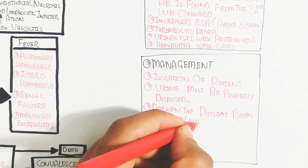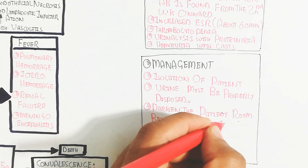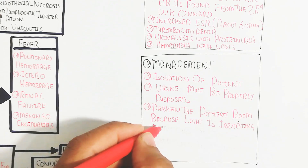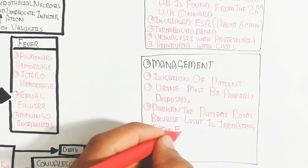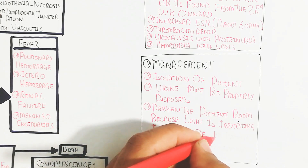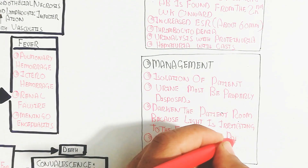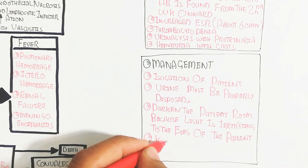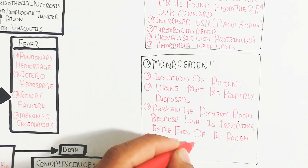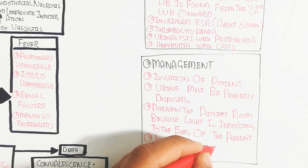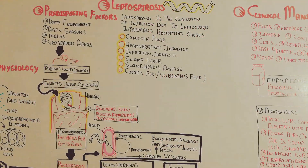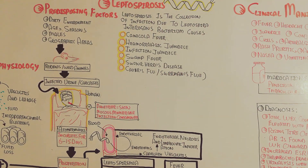Management includes isolation of the patient. Urine must be properly disposed of. Darken the patient's room because light is irritating to the eyes of the patient. Keep the environment clean.